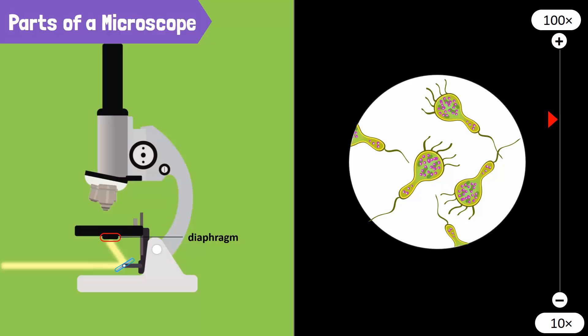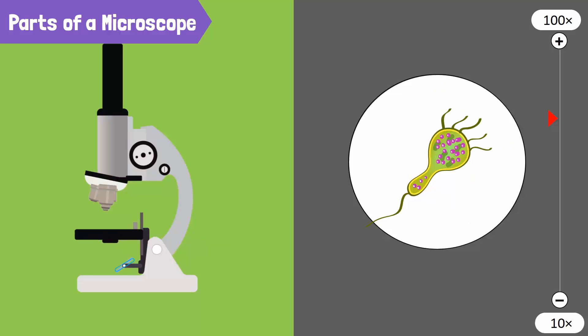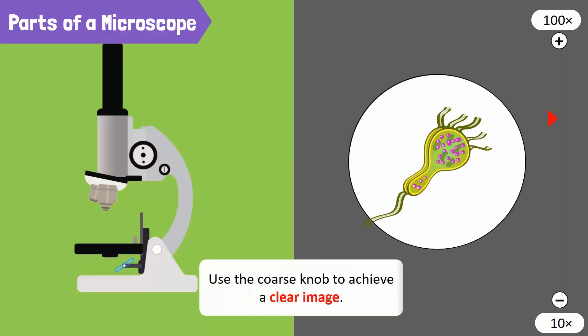You may need to focus, with the help of the coarse knob, to move the stage up and down, until the image is clear and not blurry. Be careful while moving the stage up not to knock into the objective lens.